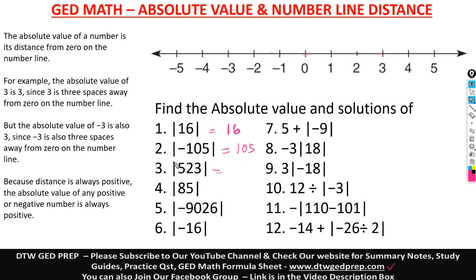In your notebook or in any textbook, when you see these two straight lines with a number in them, it means absolute value. So when you see those bars around negative six, it means the absolute value of negative six, which gives you a positive six — a positive number.